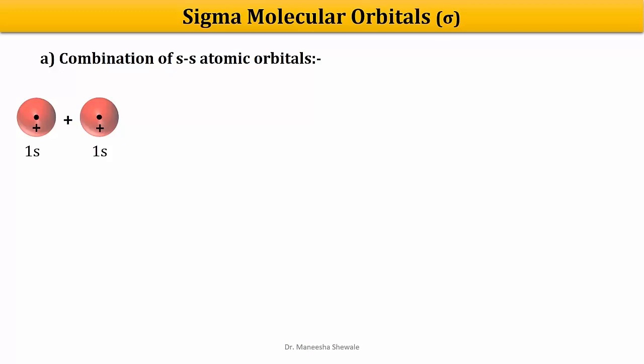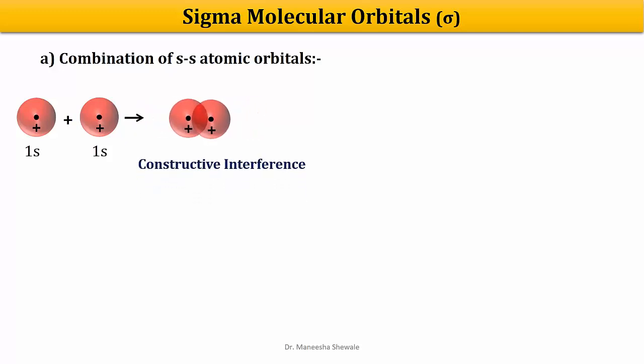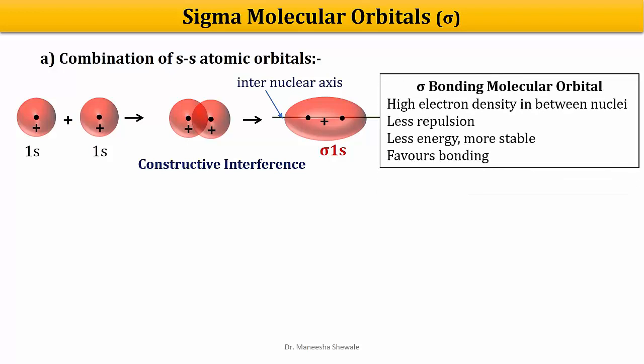Here we have two atomic orbitals both with a positive sign. When these two atomic orbitals approach each other, this is a constructive interference. This results in the formation of a molecular orbital represented as sigma, and it is a bonding molecular orbital. In the sigma bonding molecular orbital, there is high electron density between the two nuclei, so repulsion between the nuclei is less. The bonding molecular orbital has lower energy than the combining atomic orbitals, making it more stable and favorable for bonding.